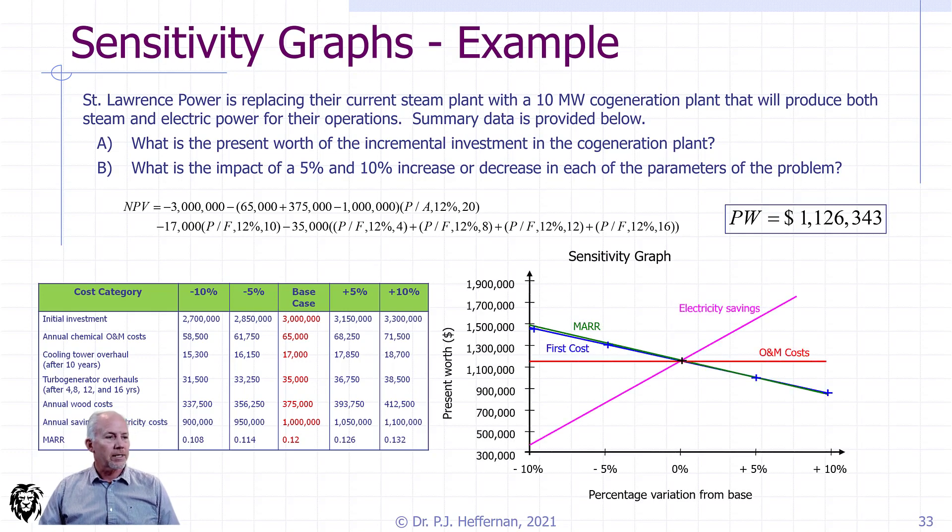Here we see the sensitivity graphs laid over top of each other. We have the present worth or net present value going up the vertical axis. We have our errors, minus 10, minus 5, 0, plus 5, plus 10% along the bottom. And each of the parameters is providing a graph, a sensitivity graph, for how it's going to affect the net present value. We see the base case is that point in the middle where everything comes together.